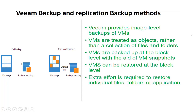Veeam provides image-level backup. Basically there are two levels of backup: one is image level and the other is file and folder level. Image level backup is very fast and reliable and uses snapshot technology. VMs are treated as an object rather than a collection of files and folders, and are backed up at the block level with the aid of Veeam snapshots. VMs can be restored at the block level, but extra effort is required to restore individual files and folders.